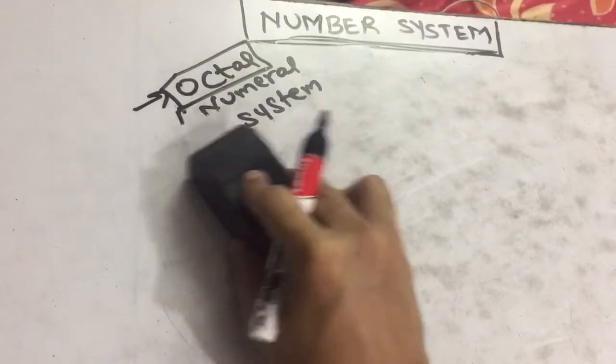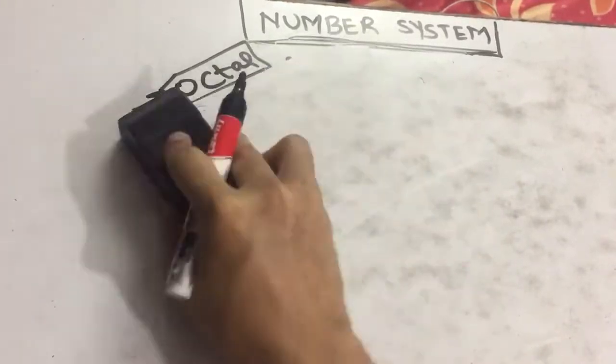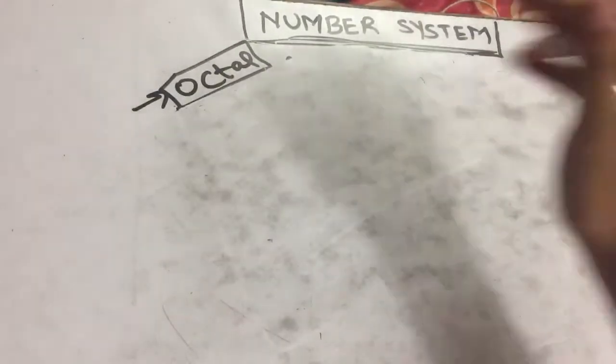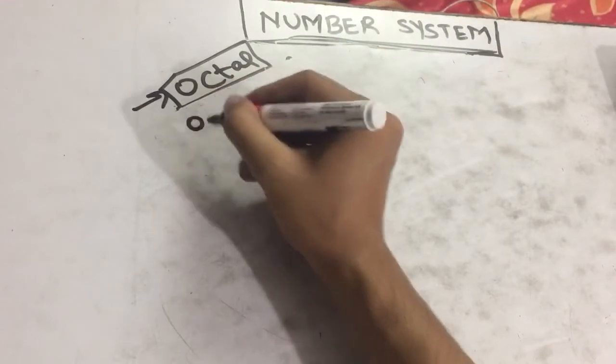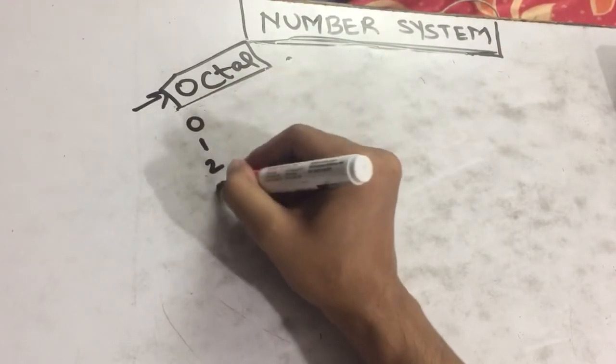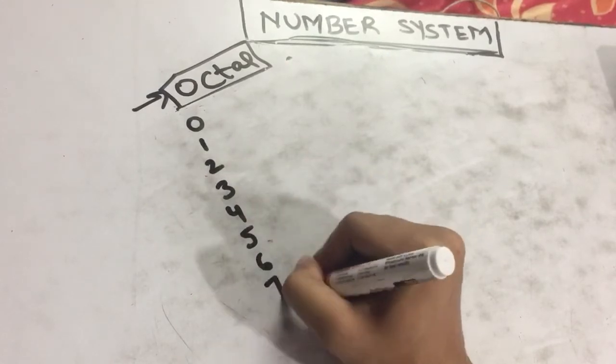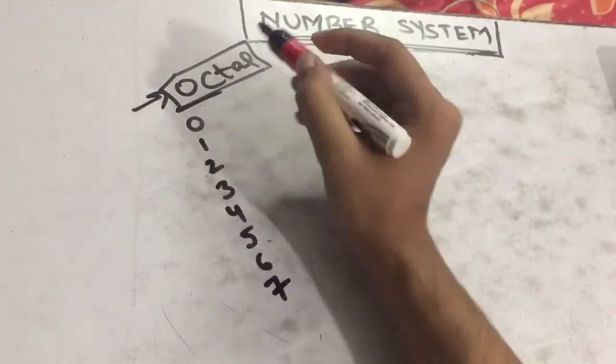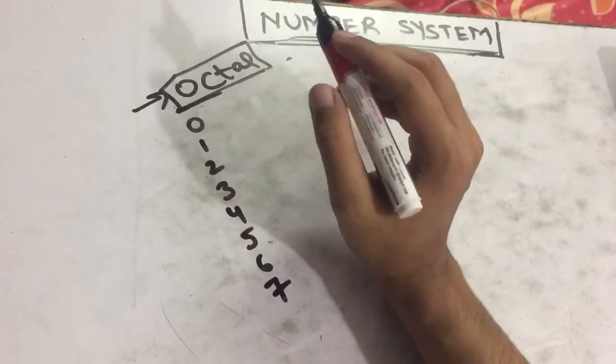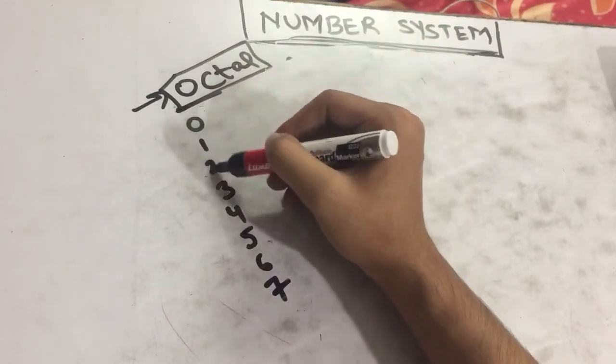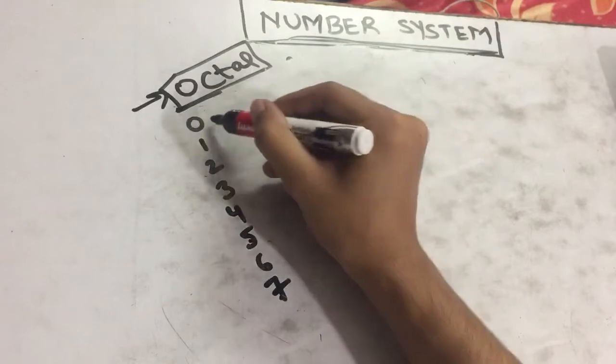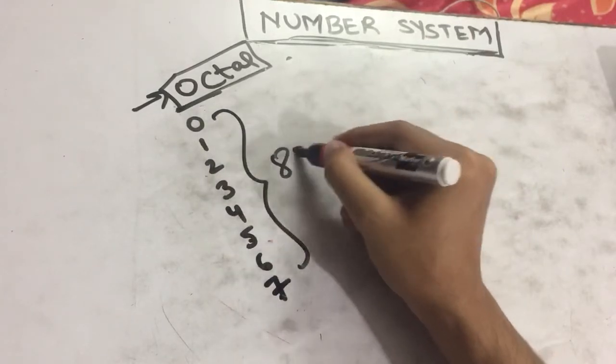We'll start with 0, 1, 2, 3, 4, 5, 6, 7. In octal number system we can have a total of 8 symbols: 1, 2, 3, 4, 5, 6, 7, 8. This is a total of 8 symbols.